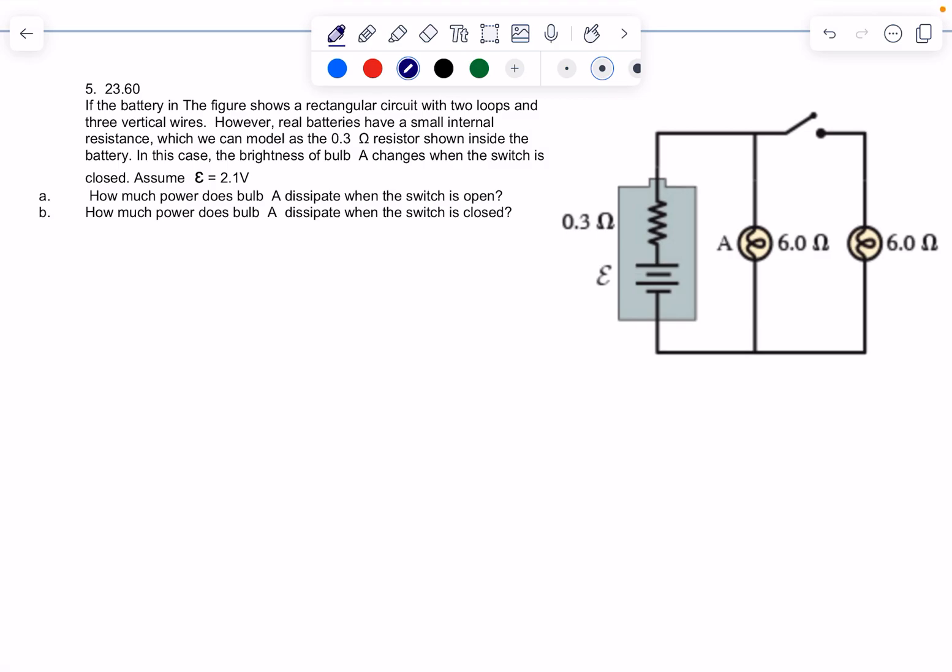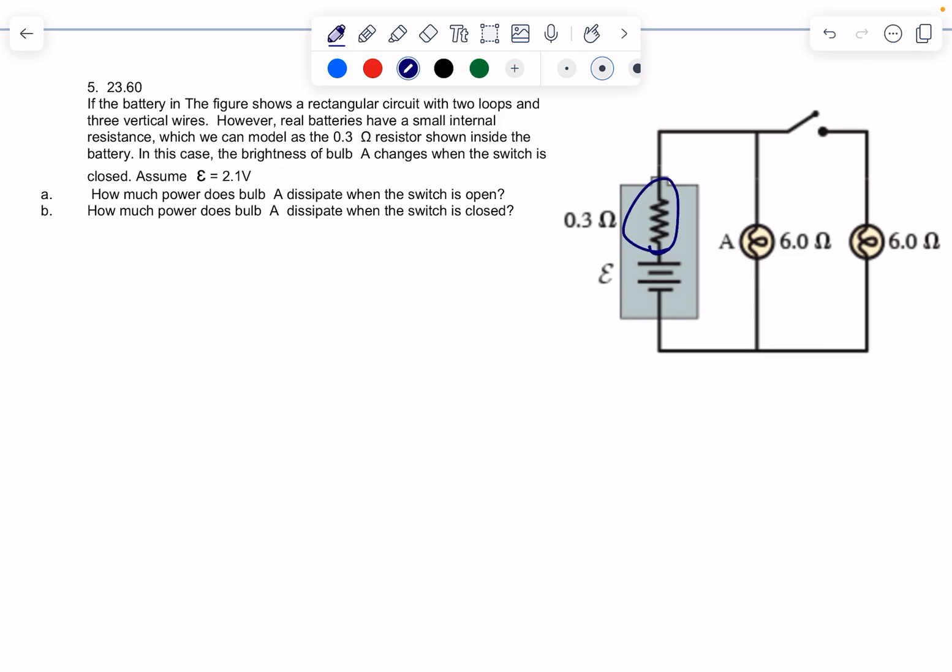I had to start over twice. Okay, hopefully that's not going to be your issue. In a real battery, the battery has some resistance of its own. So now, how much power does bulb A dissipate when the switch is open?